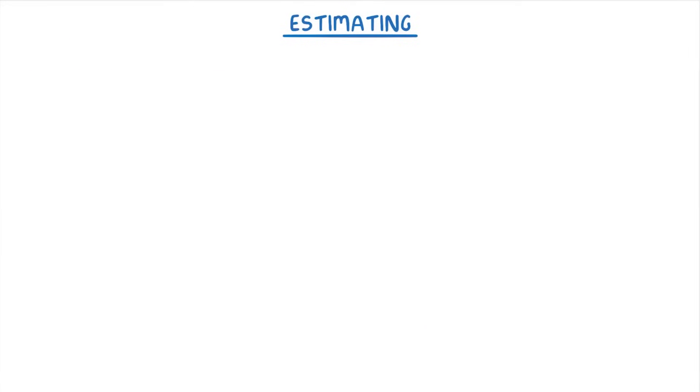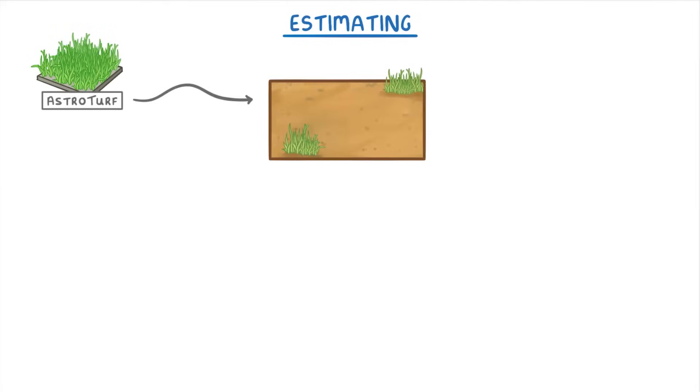Sometimes, you might need to use estimation within a real-life scenario. For example, imagine that we want to lay down some astroturf in a garden. The garden's 13.2 metres by 7.7 metres. And the astroturf is £14.30 plus 18% tax per square metre. And we need to estimate how much the turf will cost altogether.